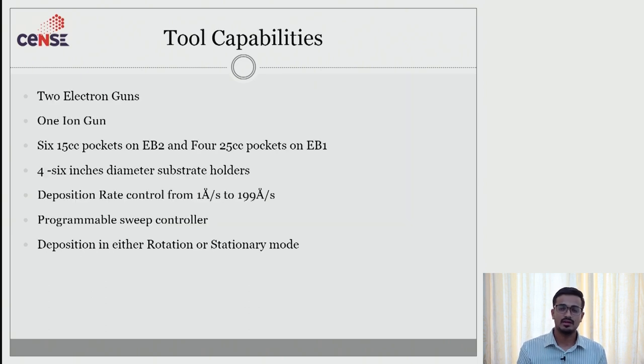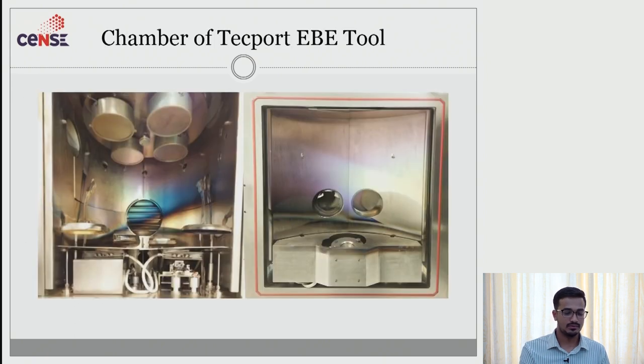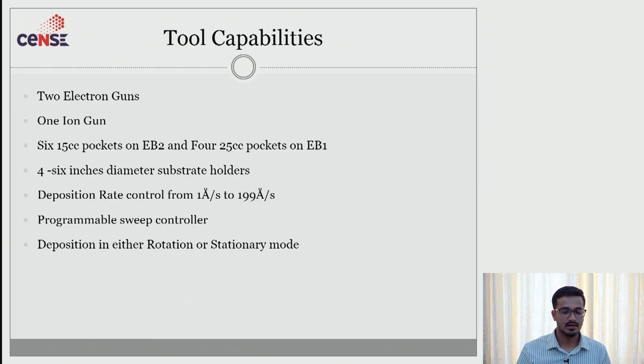Moving on to tool capabilities. We have six in one gun and 25 cc pockets of four in another gun and we can house six inch diameter wafer. We have two guns and one ion gun and we can also house four different wafers onto a six inch substrate holder. And our deposition rate can be controlled from one angstrom per second to 199 angstrom per second. We can also have a programmable sweep controller and we can do a deposition in either stationary mode or rotational mode.